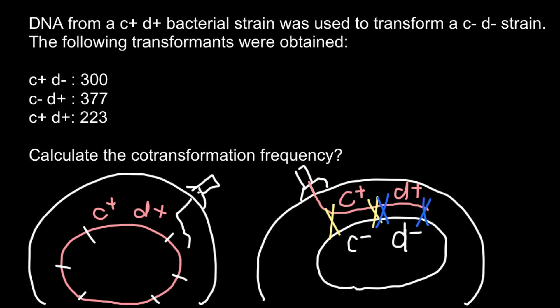But also, in some cases crossing over might happen here and here. In this case, both genes would be incorporated into the host DNA. And we would see genotype C-positive and D-positive in this bacteria strain.